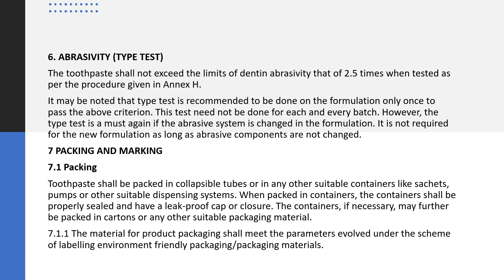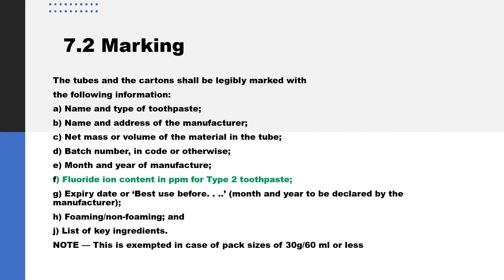Regarding packing and marking, all containers, closures, collapsible tubes, and sachets have to be leak-proof and the closure should be tightly packed. The details to be mentioned on the label include the name and type of toothpaste — whether fluoridated or non-fluoridated — address of the manufacturer, quantity of the substance, batch number, month and year of manufacturing, best before period, and expiry date. Importantly, fluoride content has to be mentioned in ppm for Type 2 toothpaste along with the list of ingredients.